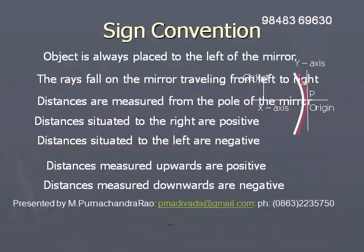All distances parallel to the principal axis are measured from the pole of the mirror, which is the origin. All distances measured to the right are positive, and all distances measured to the left are negative.